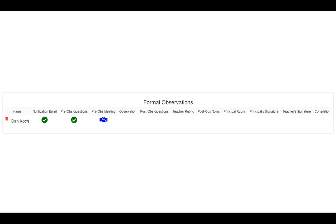As you're here, you'll notice that the person will eventually do their pre-observation questions. You'll get a little green check mark when they've done that. You'll get an email notification, and then you can go in and start to click on the blue handshake for the pre-observation meeting when you meet with them.